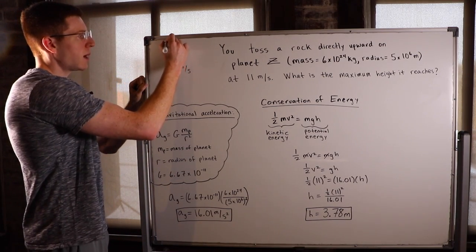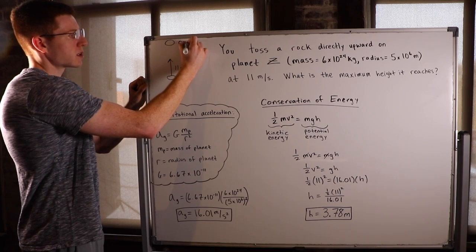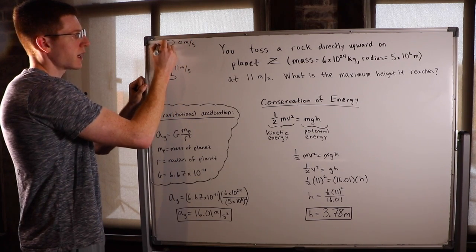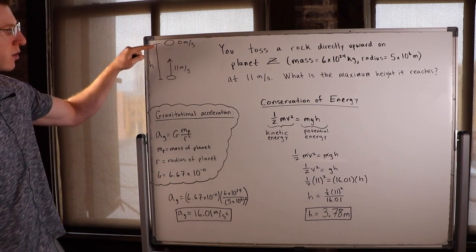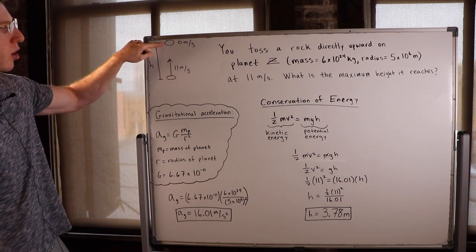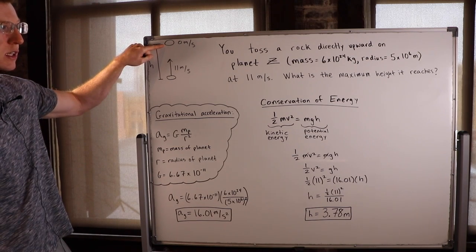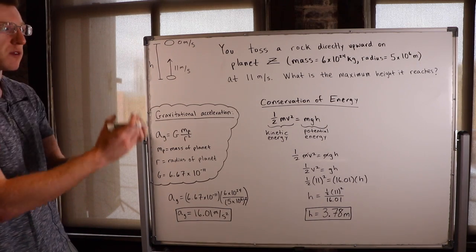But then once it gets to the top here, it's going to be going 0 meters per second, right? And then it's going to have some height above the ground that it can fall back down. So up here, it actually has all potential energy. Potential energy is where something has the potential to fall down.